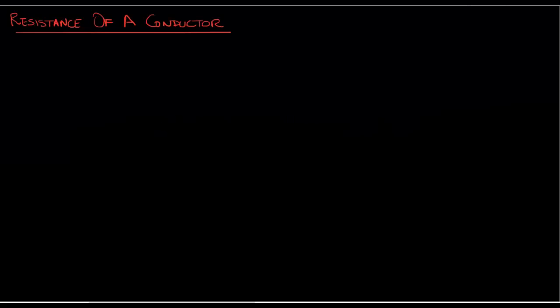We're going to begin our discussion on transmission line modeling today. We've seen per unit quantities so far and we're going to move into transmission line modeling. The three basic elements we need to consider when modeling transmission lines are resistance, inductance, and capacitance, and we're going to start with the most basic of them: resistance.